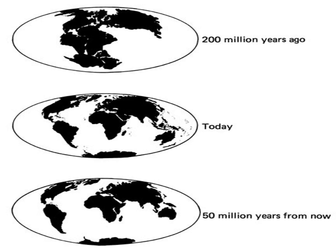This diagram is very similar except it includes a bit of the future: 200 million years ago at the top, today in the middle, and 50 million years from now at the bottom. You can see that in certain parts there are bigger gaps and in certain parts it's more squished together. Look at the United States and what's happened to Florida and the Gulf of Mexico — it's pretty cool.